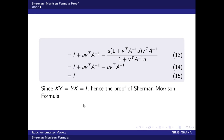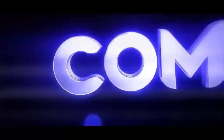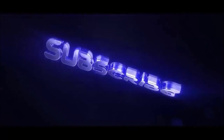Since case one and case two both give us our identity matrix, we can say this is the proof of the Sherman-Morrison formula. We have come to the end of this lesson and I believe this video has been helpful. Please like, comment, and subscribe — hit the like button and click the bell.